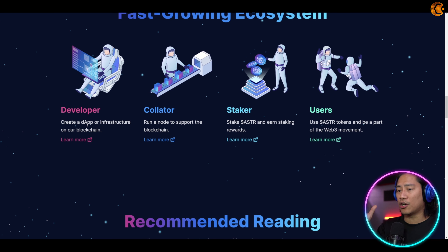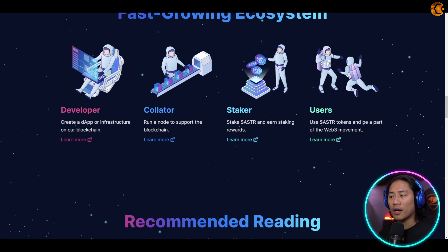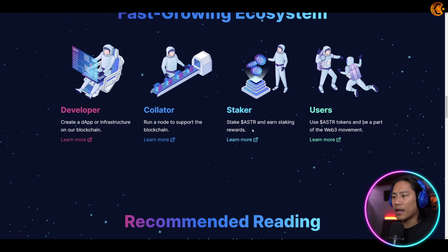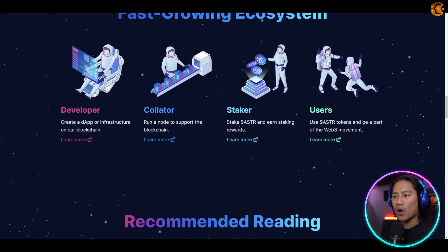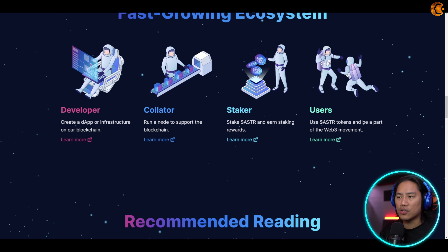Join their fast-growing ecosystem — you have the developer, the collator, staker, and users. So you can see for yourself: are you a developer, are you a staker, or are you a user? ASTR is the token they use, and you can be a part of the Web3 movement by using your ASTR token.